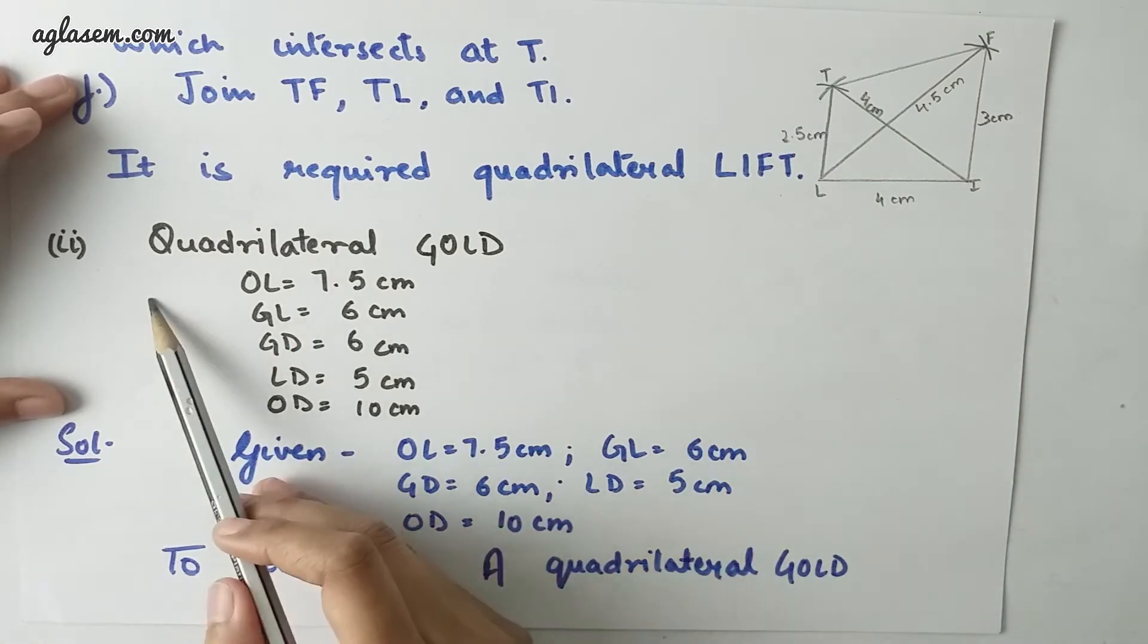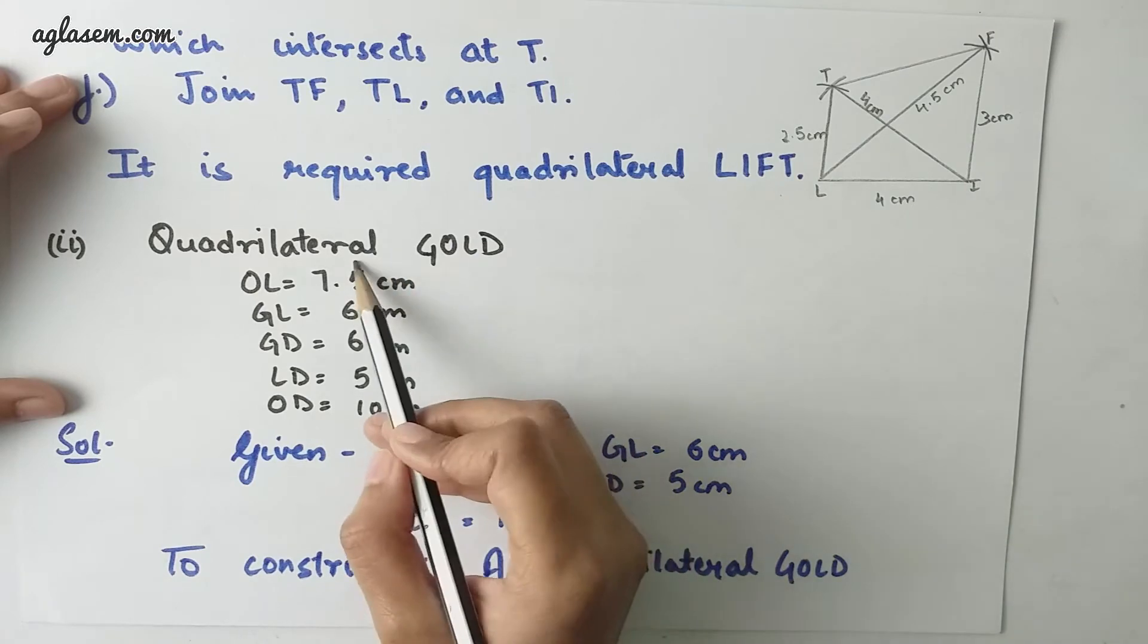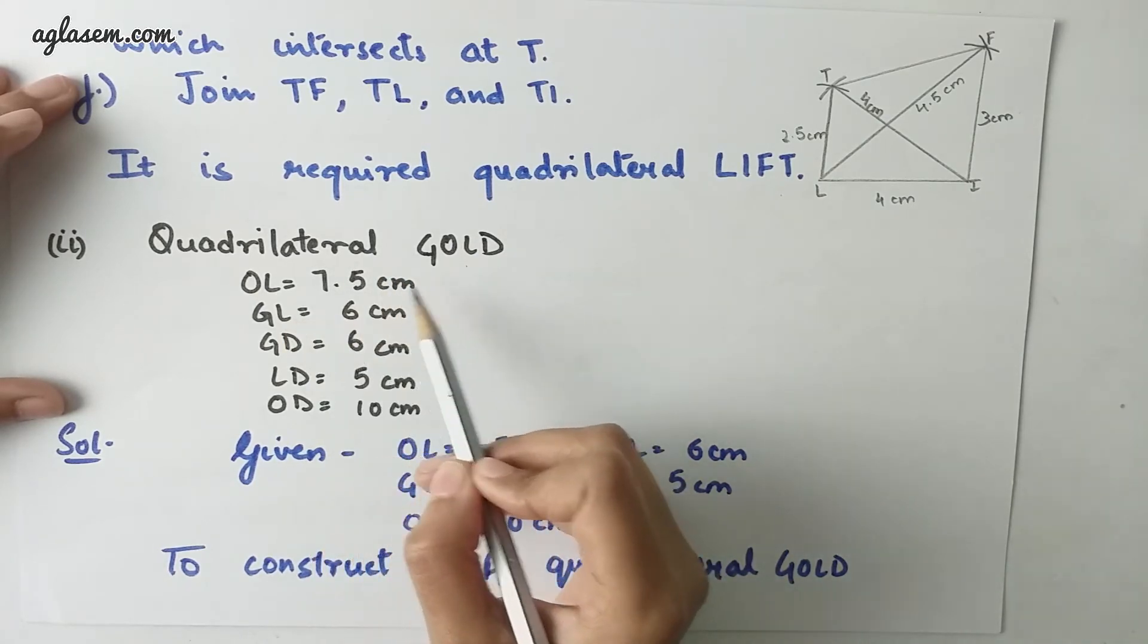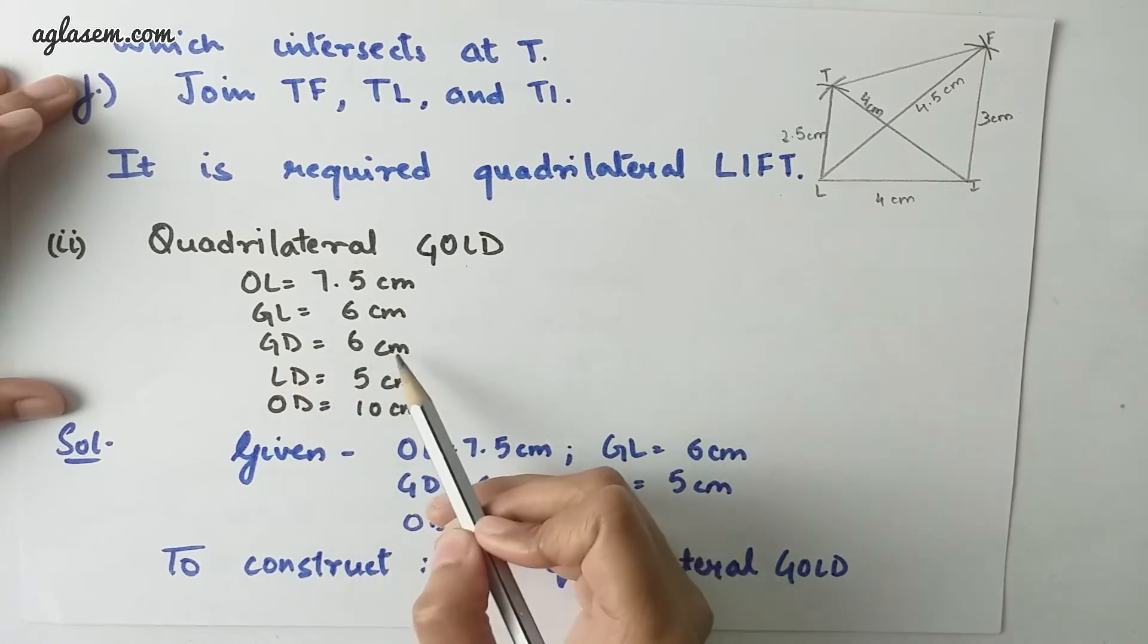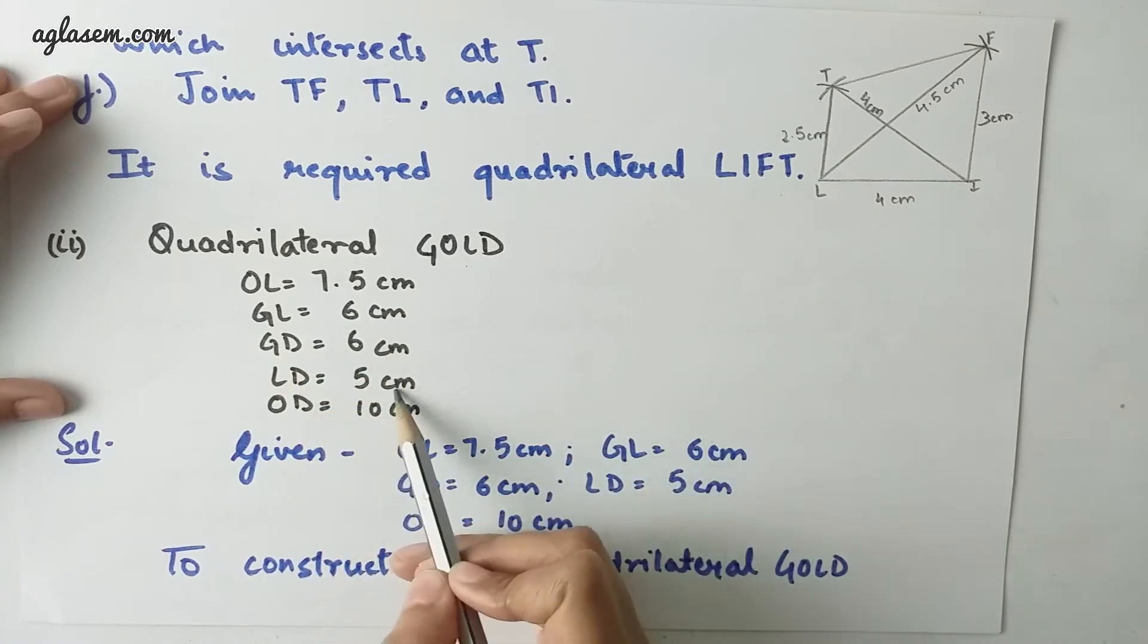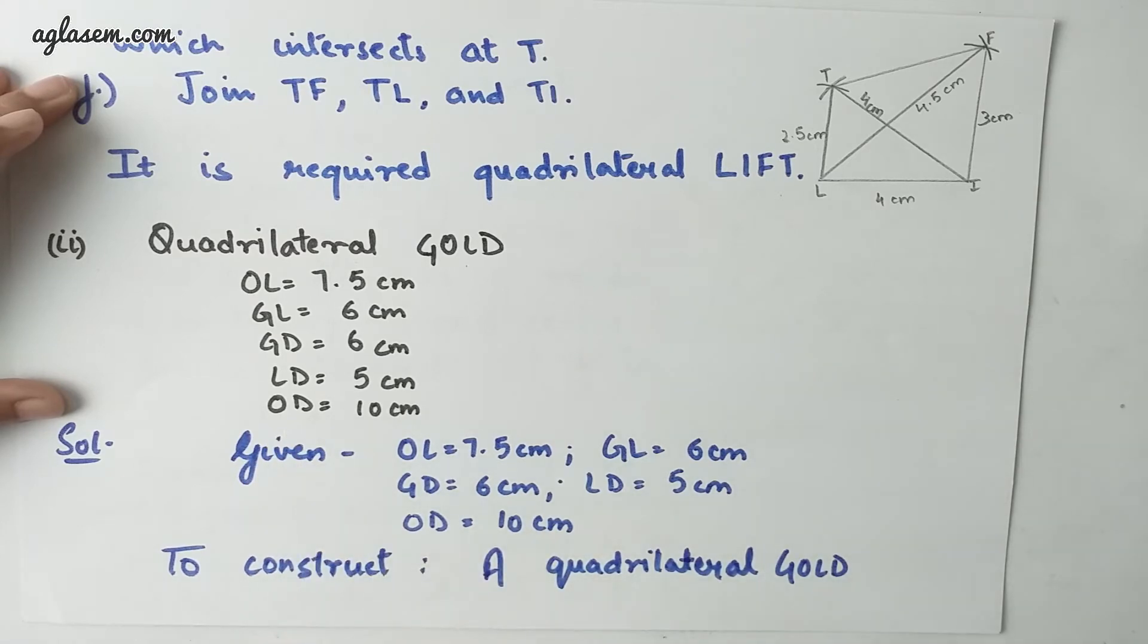Moving to the second part of the same question, quadrilateral GOLD in which OL is 7.5 cm, GL is 6 cm, GD is 6 cm, LD is 5 cm and OD is 10 cm.